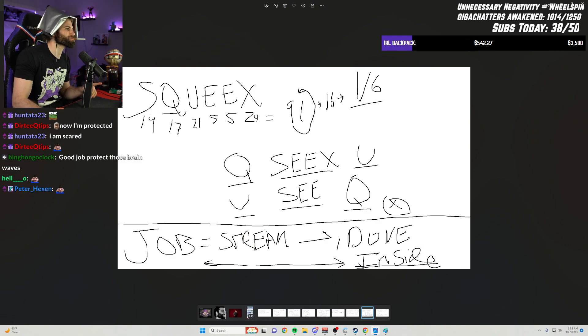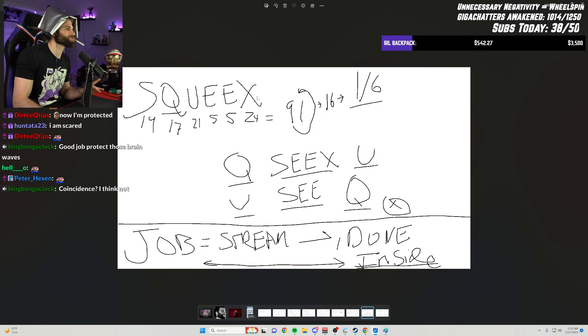Squeaks. Big operative letter there is Q. Let's look past that for a moment. We add all the letters up in Squeaks to a total, we get 91. What happens when we flip 91 on its head,